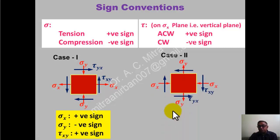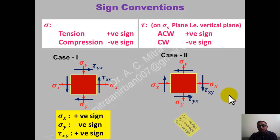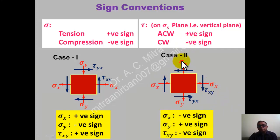Check the second case also. Sigma x is towards the body — compression, negative. Sigma y is outward from the body — tension, positive. For tau xy, check the sign convention on the vertical or sigma x plane. It is rotating in the clockwise direction, so tau xy is negative. So: sigma x negative, sigma y positive, tau xy negative. With this proper sign convention, put these values into the formula of principal stresses.